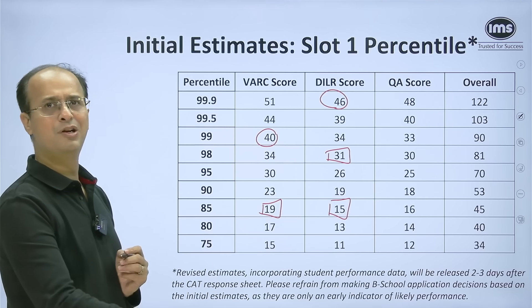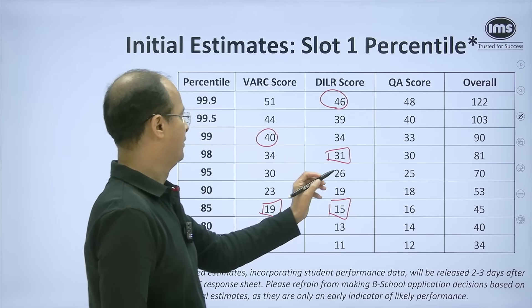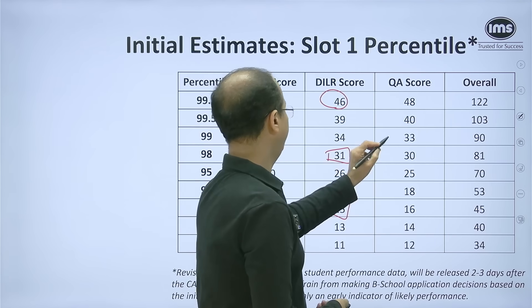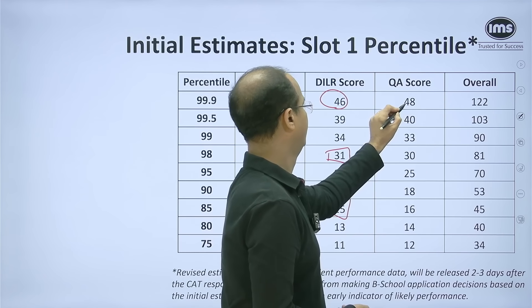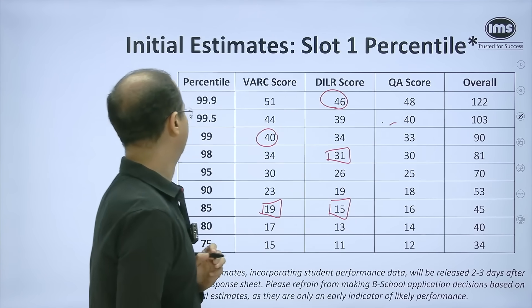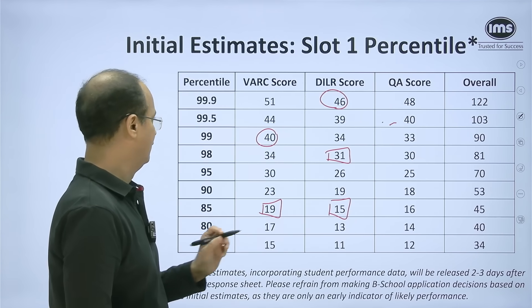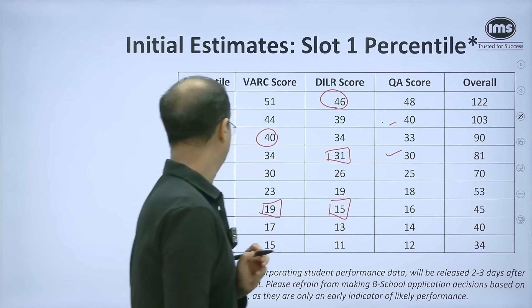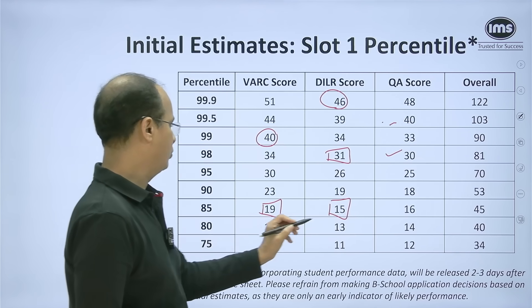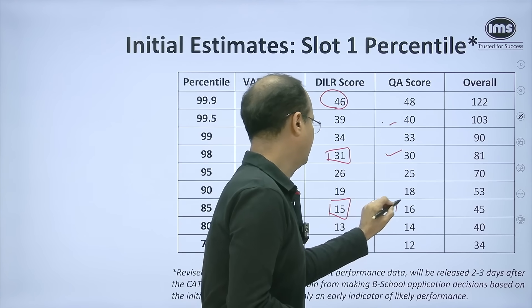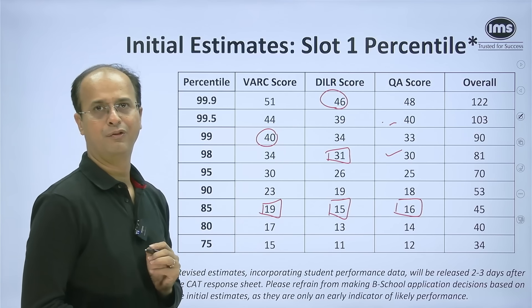In QA, the story is very similar to last year. We think a score of about 48 will help you reach the 99.9 percentile mark. A score of 30 will take you to the 98th percentile mark, and a score of 16 will help you clear the cutoff.